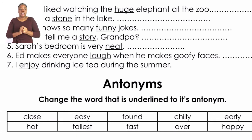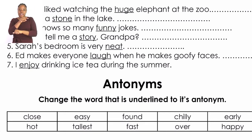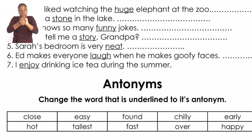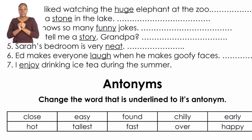Let's take a look at number five. Number five says: 'Sarah's bedroom is very tidy.' The word 'tidy' is the one that is underlined and you have to think of another word that means tidy. Another word that can mean tidy is 'neat,' so you can write the word 'neat.' The rest of the synonyms you are going to do by yourselves.